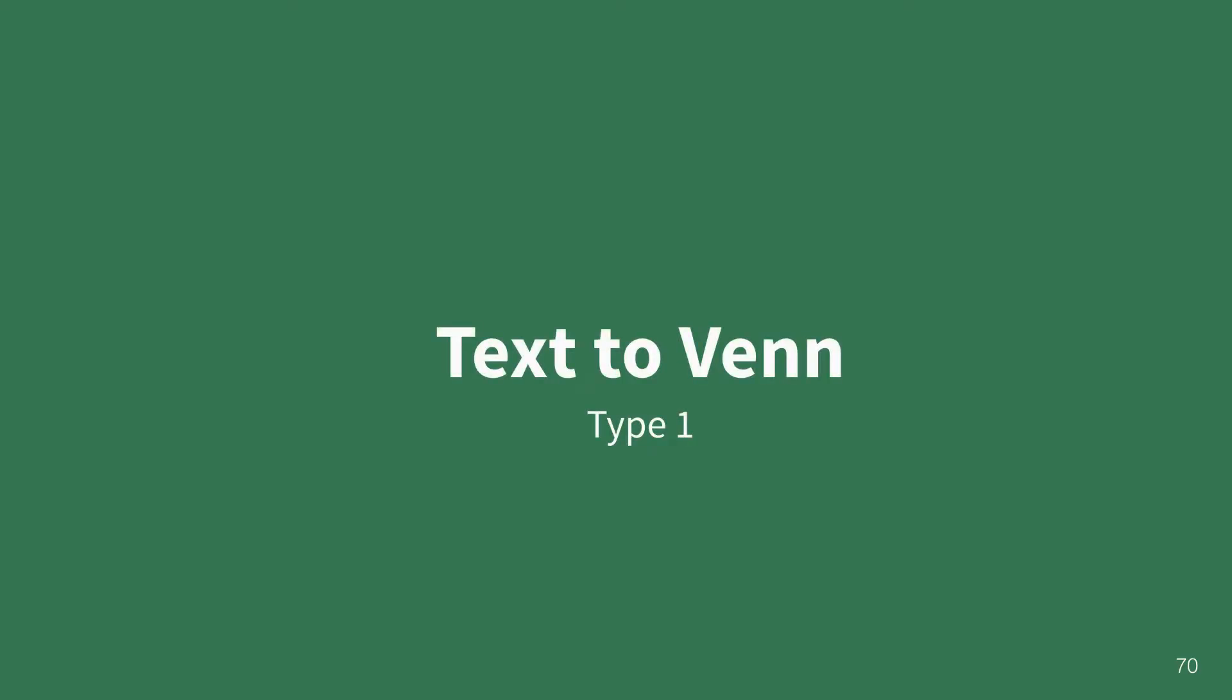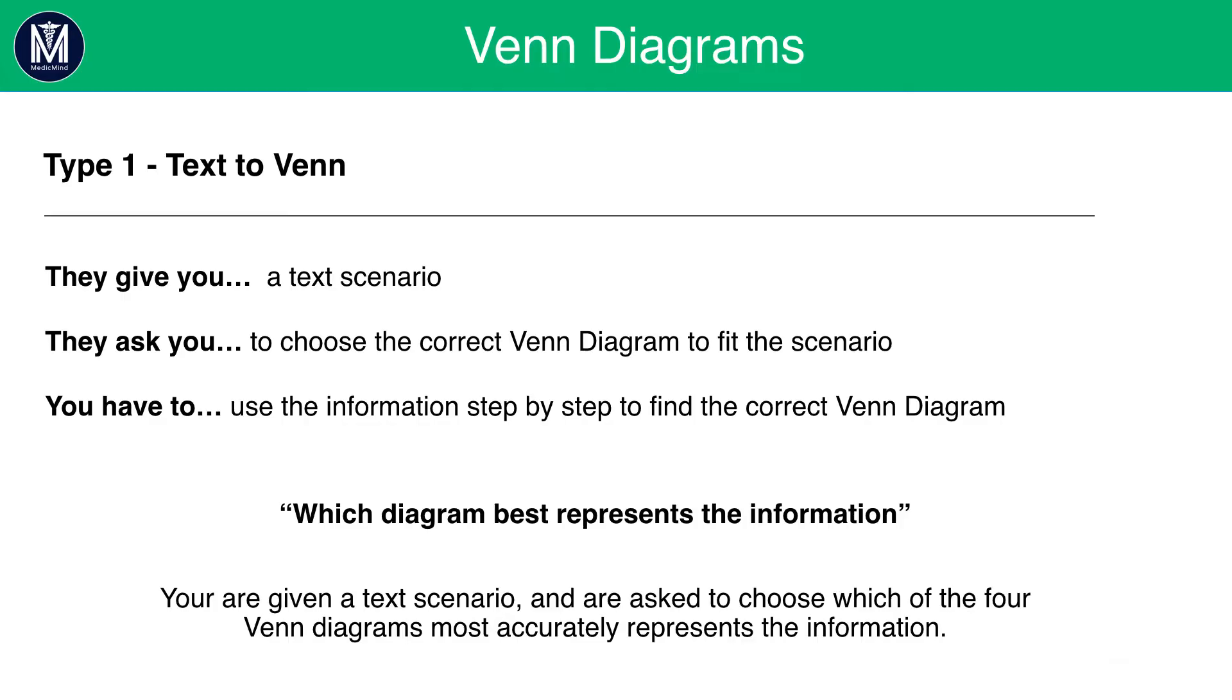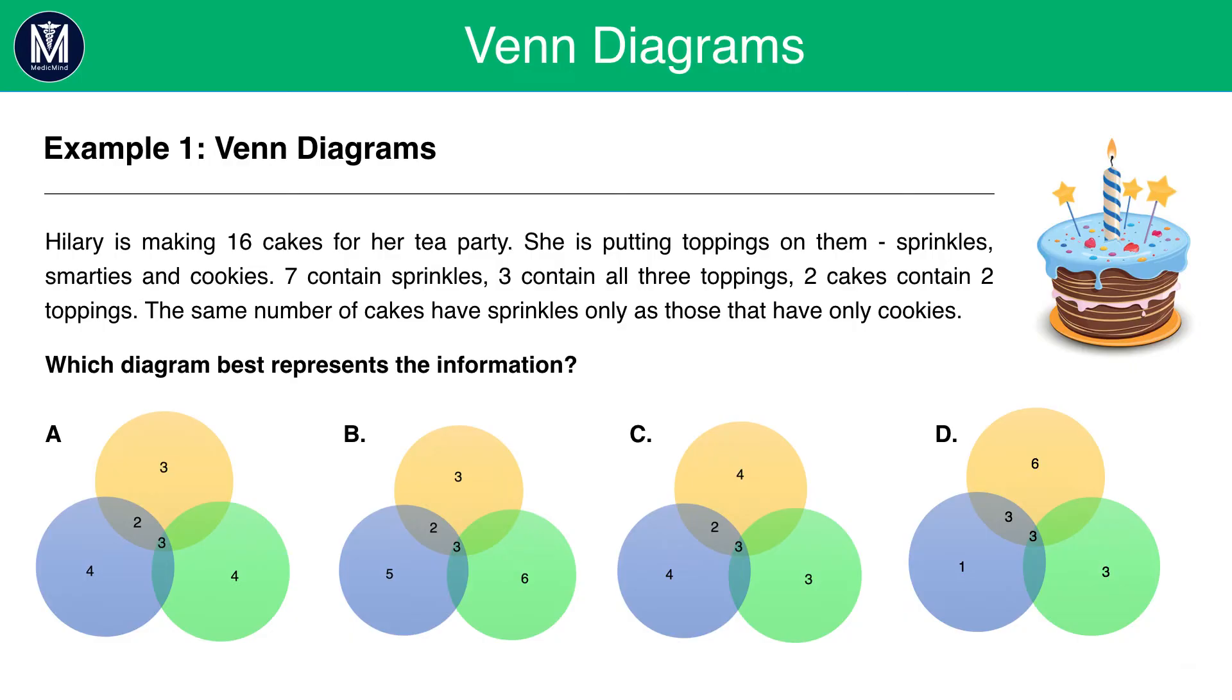Let's start with text to Venn first. Here they give you a text scenario. They ask you to choose the correct Venn diagram to fit the scenario. And you have to use the information step by step to find the correct Venn diagram. Which diagram best represents the information is the sort of statement you will be given. This should be a clue that it is a text to Venn question.